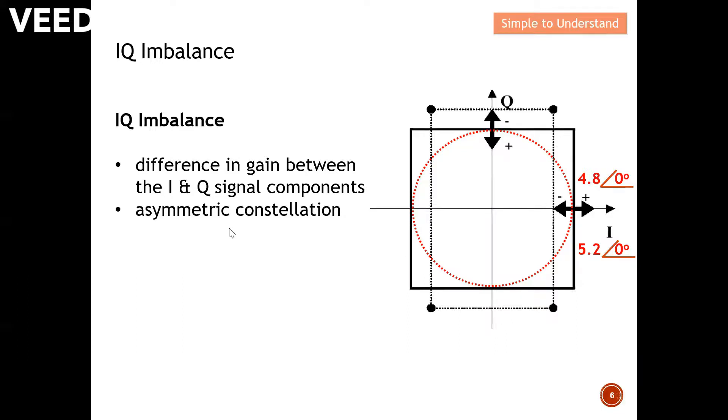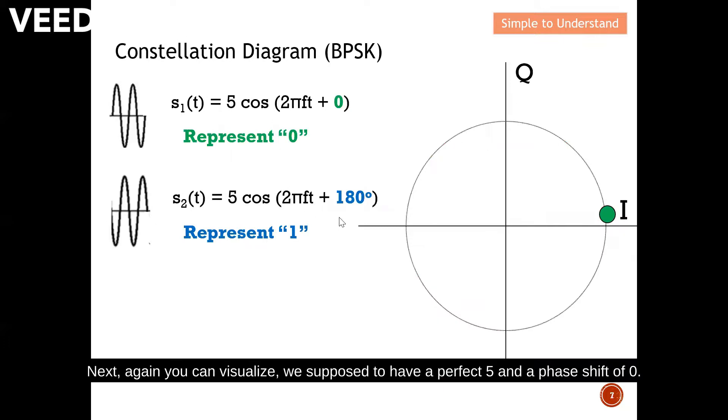Next, again, you can visualize we're supposed to have a perfect five and a phase shift of zero. What if we have some degree of error? For example, we have a degree of error of two which is shown over here. So instead of a perfect dot here, we actually have a degree of two. You can also imagine, let's say, we can have a degree of minus two error also. So instead of a perfect dot over here, which results the point at over here. So this kind of error we call it a quadrature error.